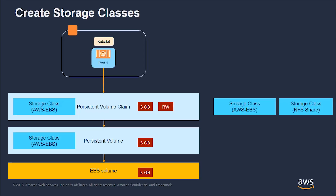So when you create a persistent volume claim, it can include a property of storage class, and if you specify, for example, GP2, then it will find a persistent volume associated with a GP2 EBS volume. You can also have a default storage class. When you create a persistent volume and request, for example, eight gigabytes of storage, the persistent volume claim will try to find a persistent volume that matches the requested size. But if it can't find it, it won't be able to provision that storage for you. However, if you already have defined a default storage class, then the persistent volume claim can use the default storage class to create a persistent volume and provision it based on the requested size.